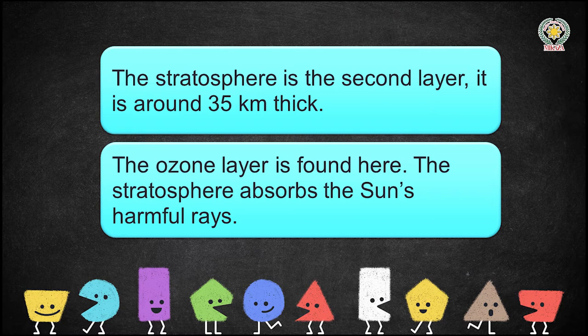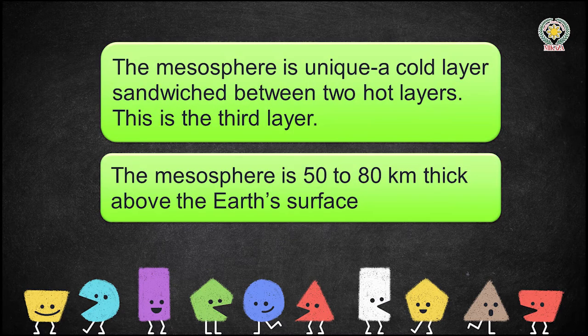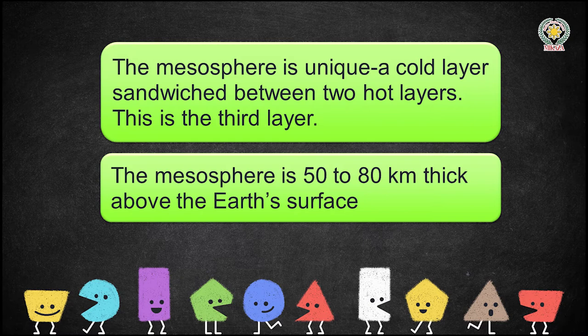The ozone layer blocks all the harmful rays from the sun — it absorbs the sun's harmful rays. Now, the mesosphere is the third layer. The mesosphere is unique: it is a cold layer sandwiched between two hot layers. The stratosphere, the second layer, is hot, and the fourth layer, the thermosphere, is also hot, but the mesosphere is uniquely cold.